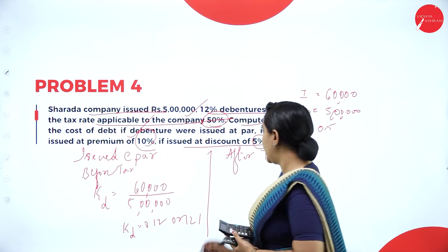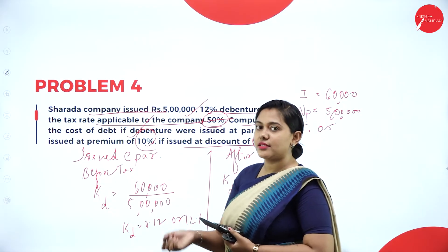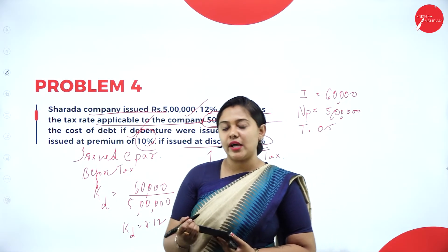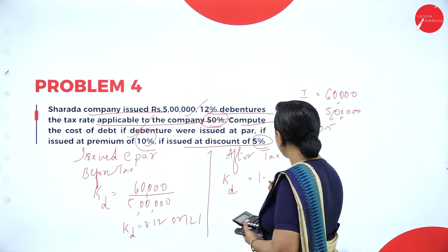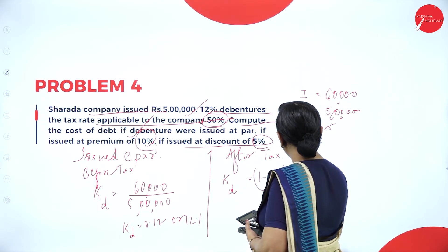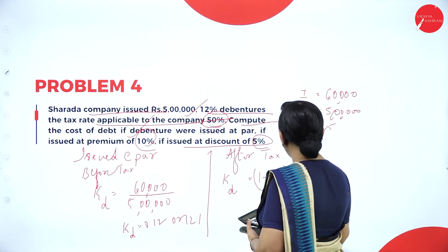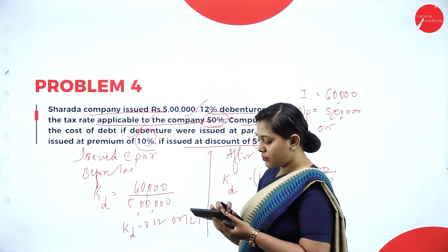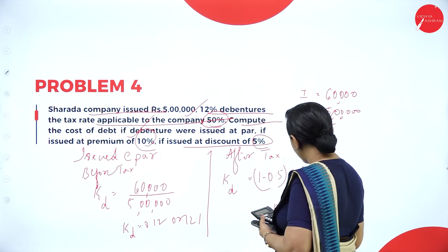After tax cost of debt = (1 minus 0.5) into 60,000 divided by 5 lakh = 0.06 or 6%.